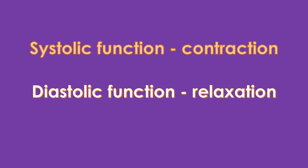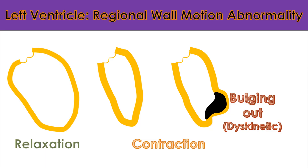Left ventricular diastolic dysfunction is quite common as age advances. Another important aspect is the contraction of each region of the left ventricle. If all regions contract normally, it is reported as no regional wall motion abnormality. If a particular region contracts poorly, it is reported as hypokinetic. A region which is not contracting at all is reported as akinetic. Sometimes a region might bulge out when all other regions are contracting — such a region is called dyskinetic.